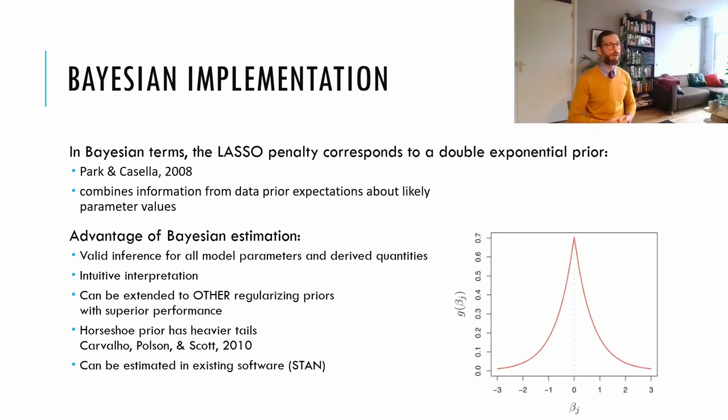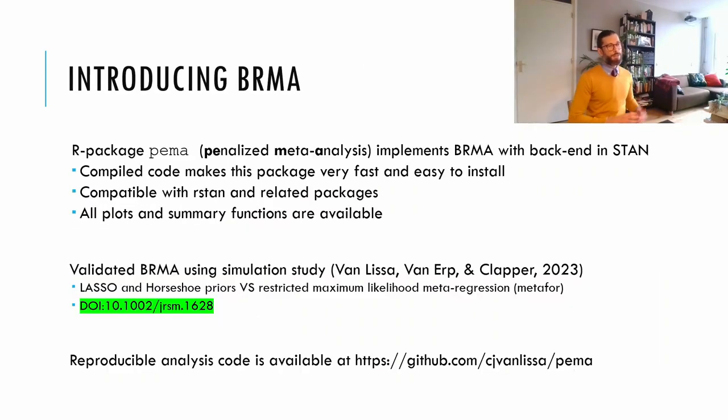Another advantage of Bayesian regression is that it can be extended to use other regularizing priors aside from the lasso one. For example, the horseshoe prior still has a high peaked probability mass around zero, but it has heavier tails. And that means that once a parameter is allowed to be in the model, it is not as biased as it would be when using a lasso prior. And a final advantage is that Bayesian regularized regression can be estimated in existing software, specifically the STAN package.